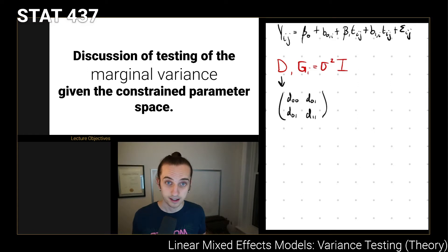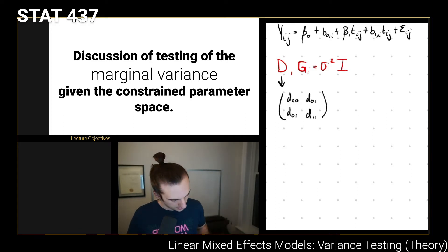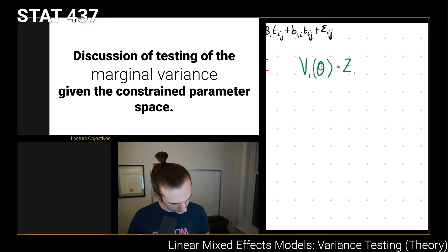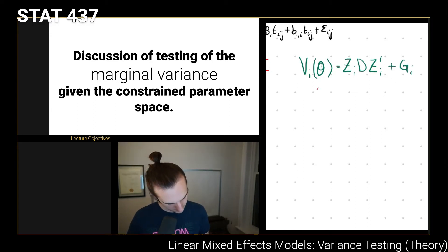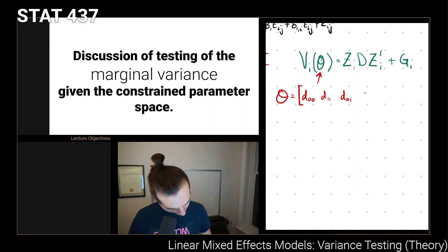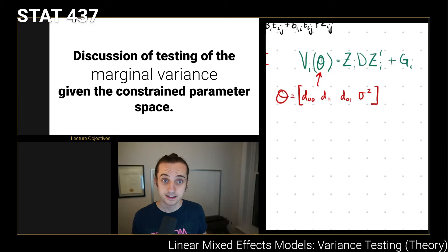So d_{00} is the variance of our random intercept, d_{01} is the covariance between the two random effects, and d_{11} is the variance of the random slope term. We expressed the variance matrix V_i with parameter theta as Z_i * D * Z_i^T plus G_i. In this case, theta contains all the parameters we want to test: d_{00}, d_{11}, d_{01}, and sigma squared.